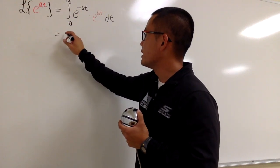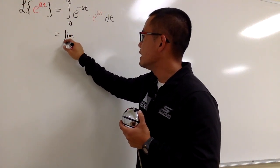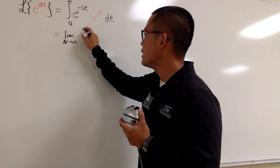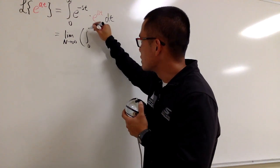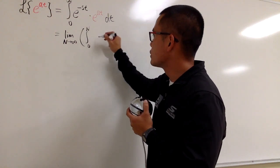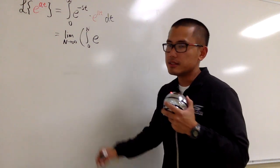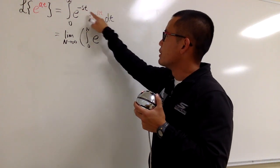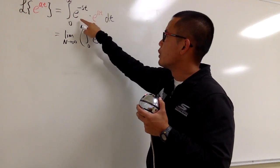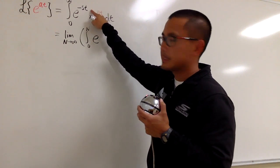So we will first write this as the limit as n goes to infinity, and now write this as integral from 0 to n. And let me just write down e right here. As you can see, both of these exponents have t. Remember, when you do this times that, you add the exponents.